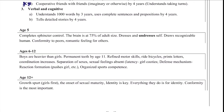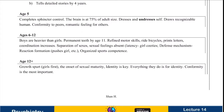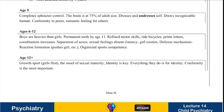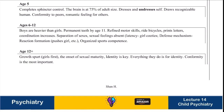By age five, children get complete sphincter control and can dress and undress themselves. Around age five they also begin to develop romantic feelings.